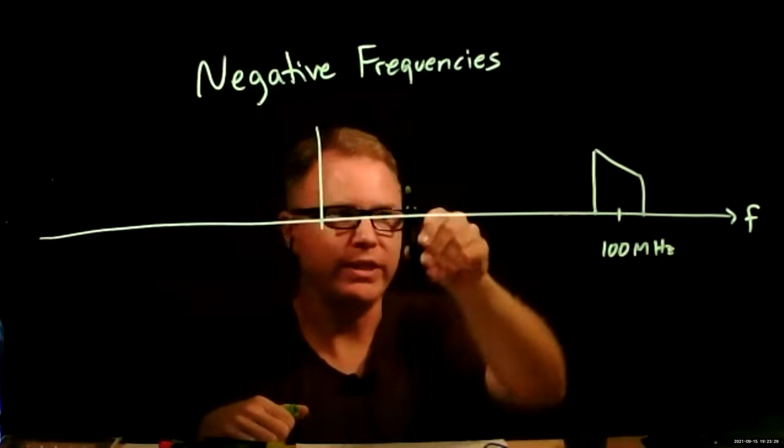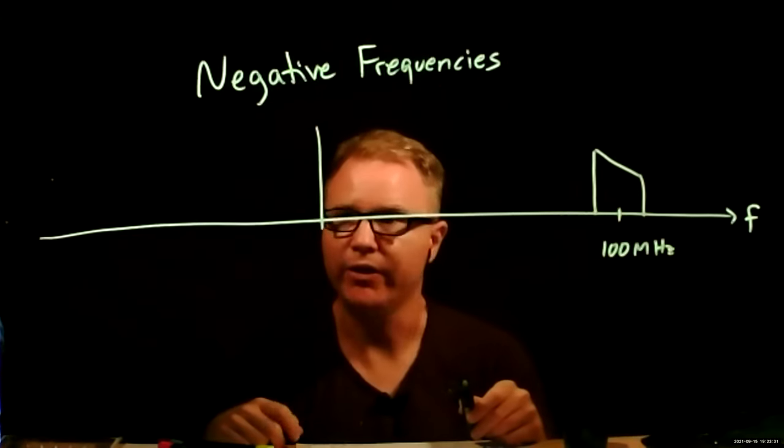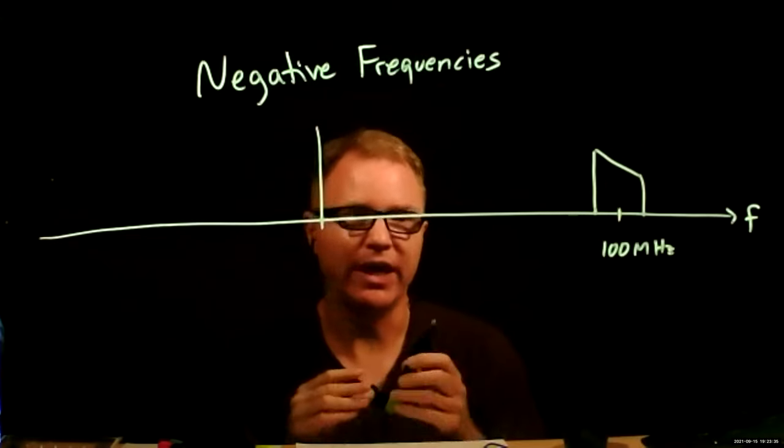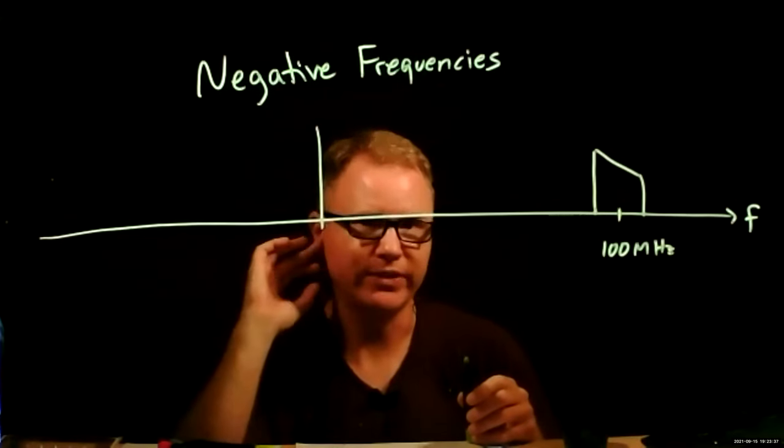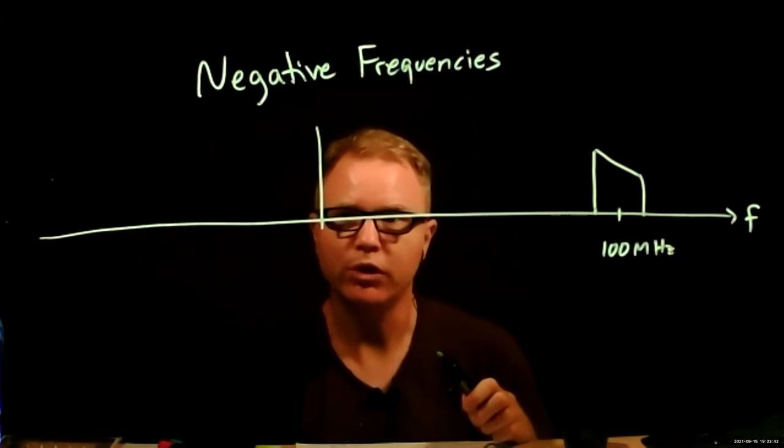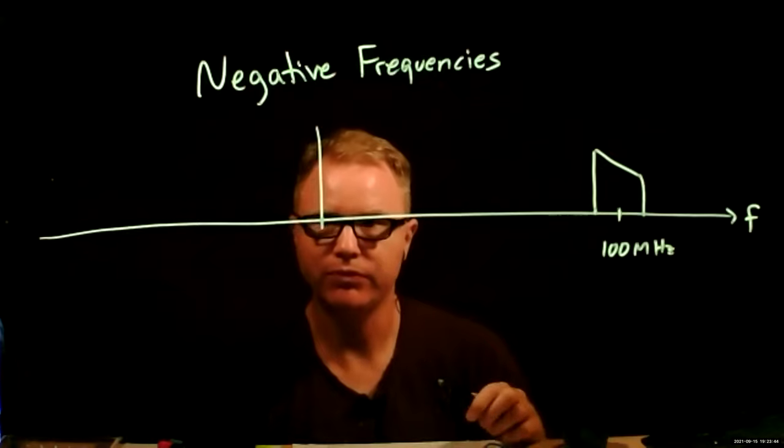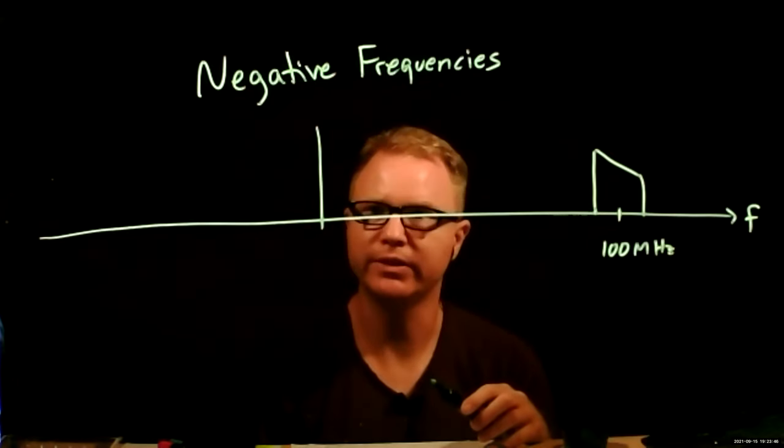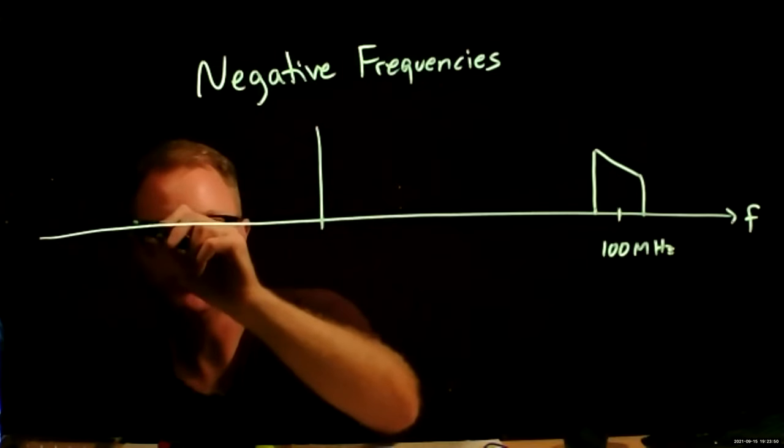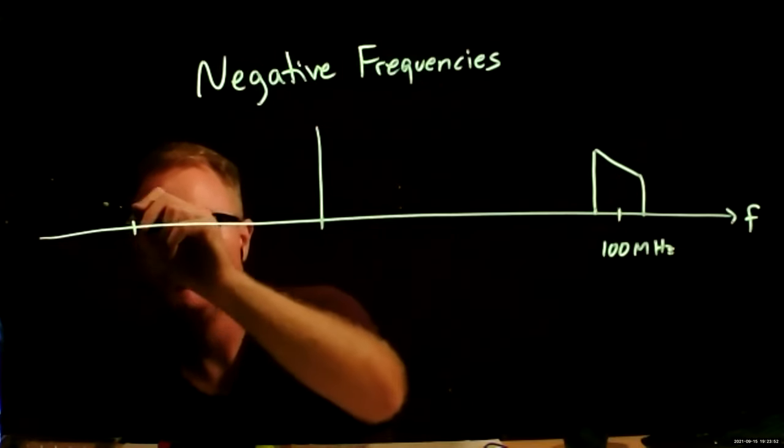So in the real world, if this were the spectrum of what's going through the air, since it's a real signal, it's made up of sines and cosines, and whenever you have sines and cosines, you can make them out of equal amounts of positive complex exponential and negative complex exponential, so the frequency spectrum of this signal is going to look symmetric.